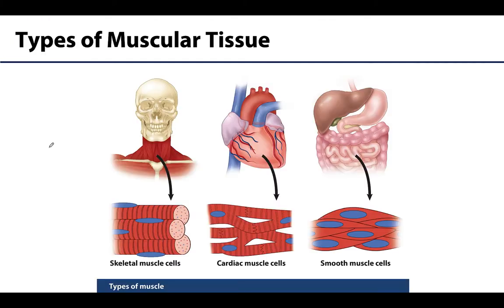But let's introduce the three types here. We'll start with skeletal muscle cells. This is named skeletal muscle because these muscles mostly attach to bone and will move the skeleton when they contract.